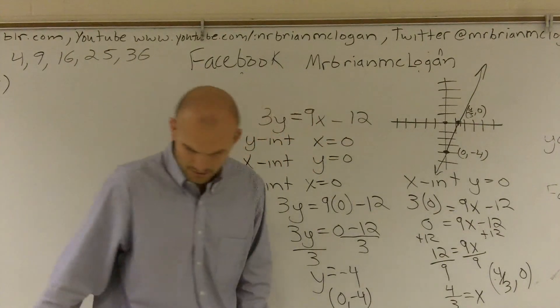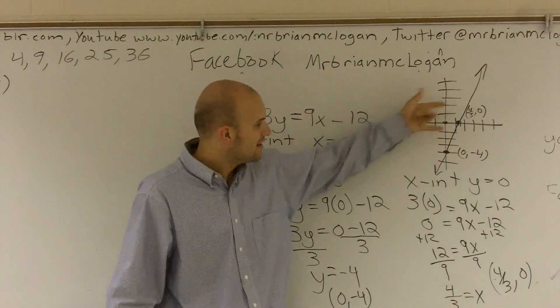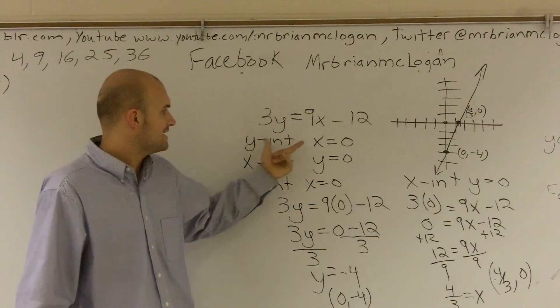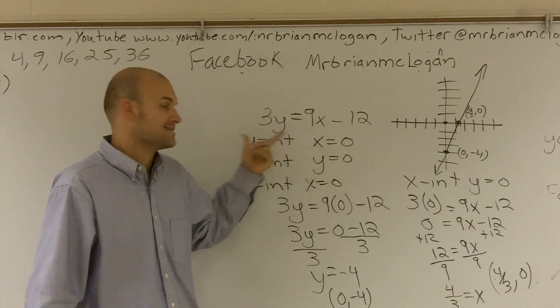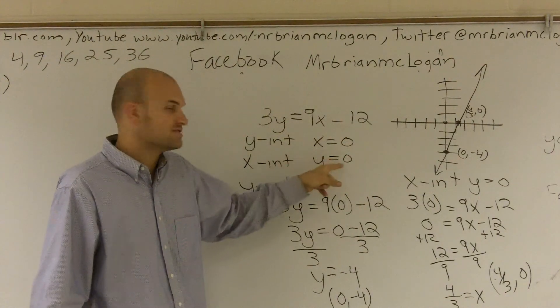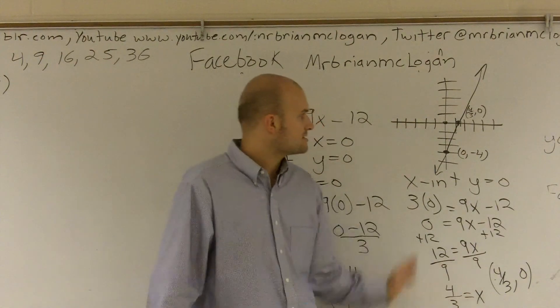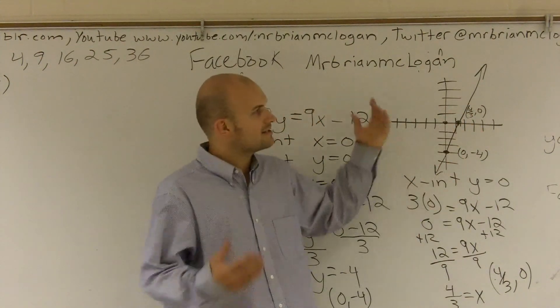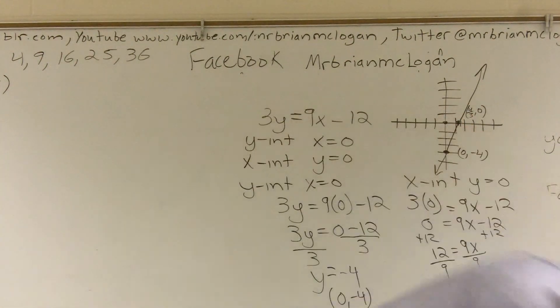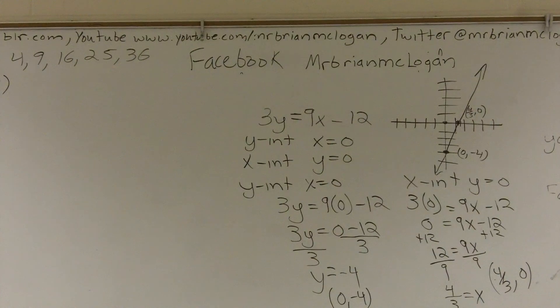So that is how you're going to graph a line when given or when finding out the x and y intercepts. Plug x in for zero for y intercept. Plug y in for zero for the x intercept. Solve them. Get your two points. Plot them on both axes. Then connect. And you're good. That simple, right?